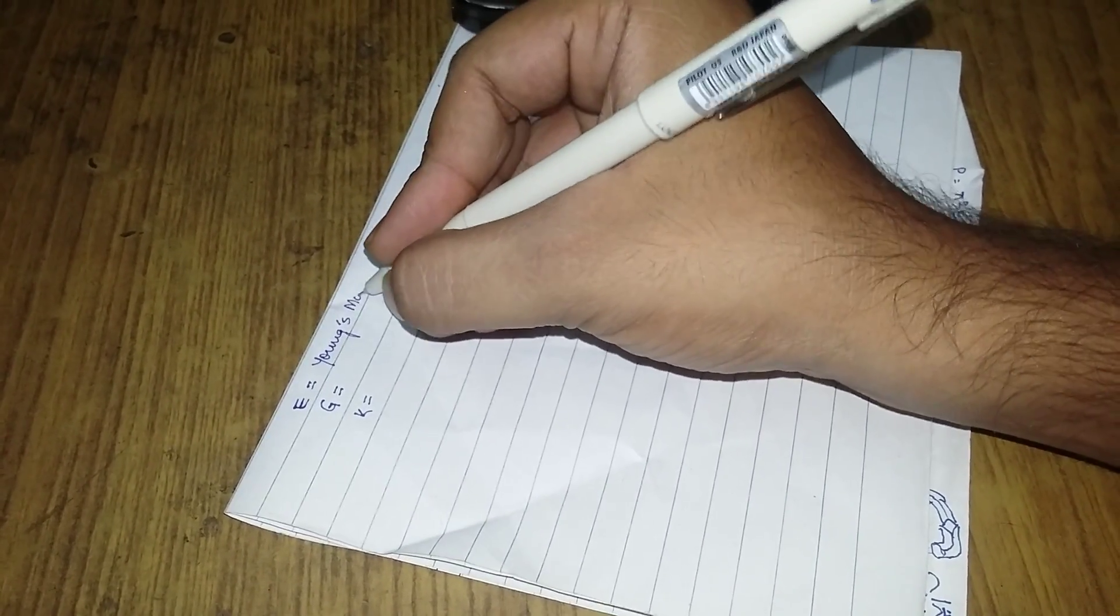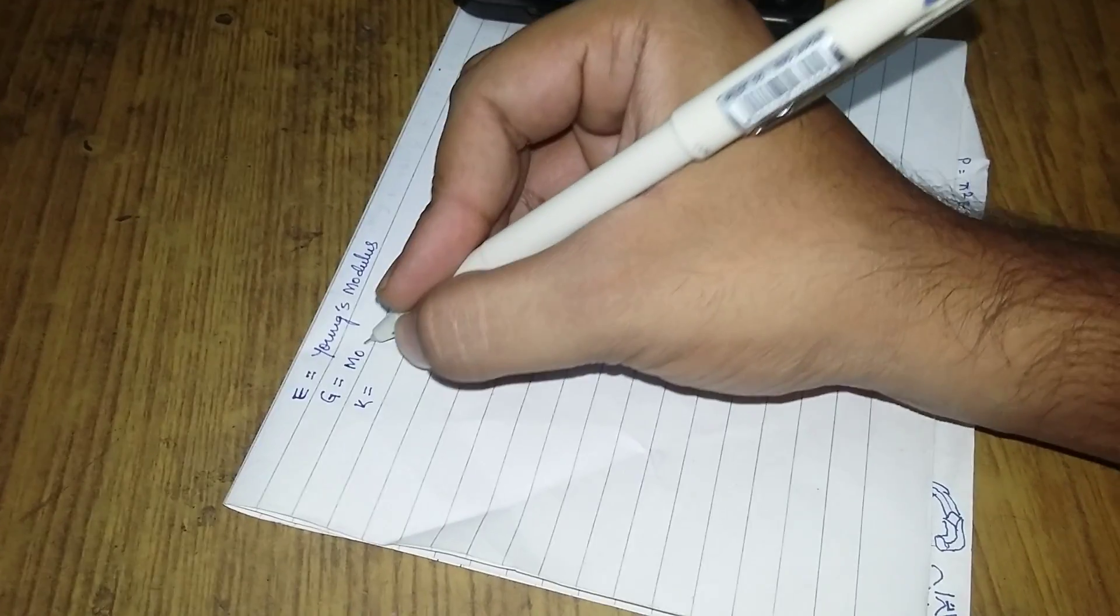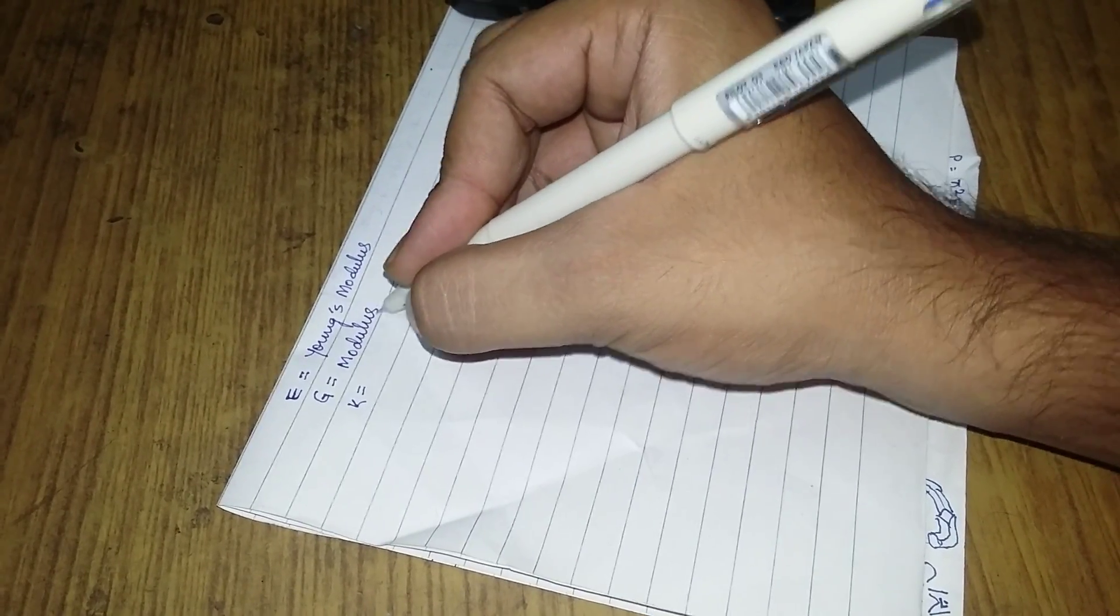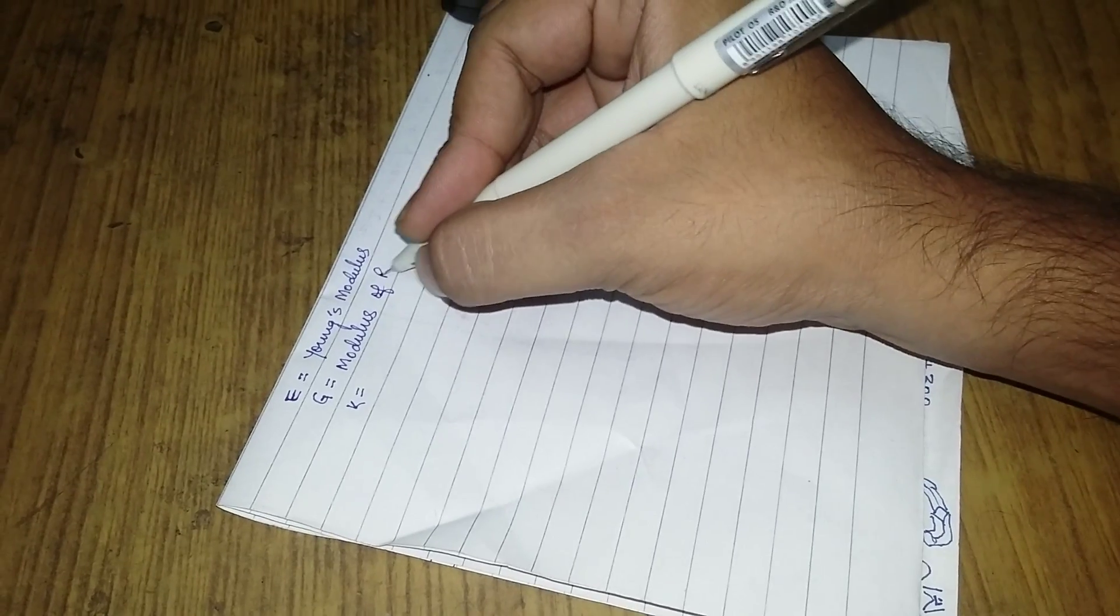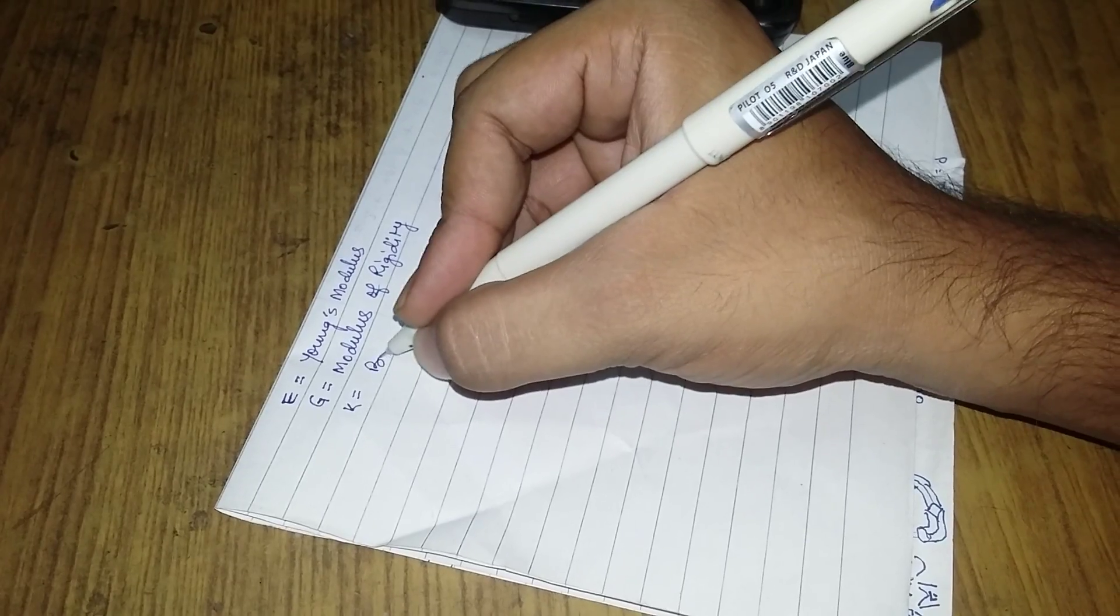So this is Young's modulus, this is the modulus of rigidity, and this is the bulk modulus.